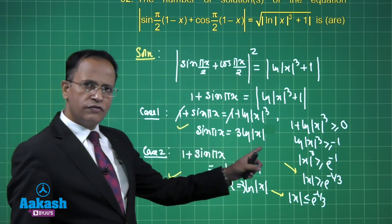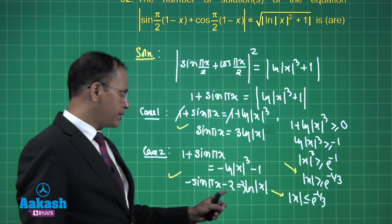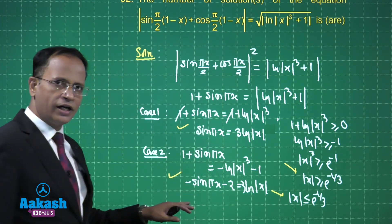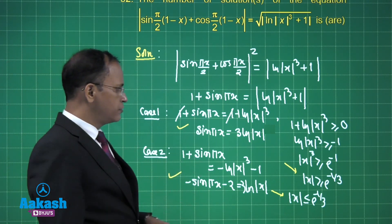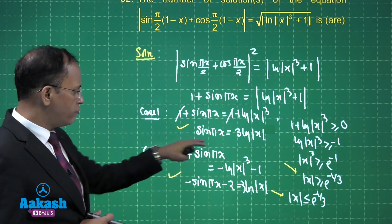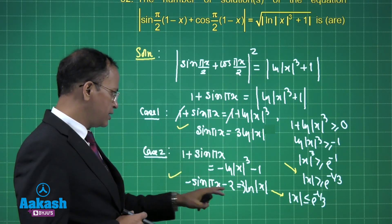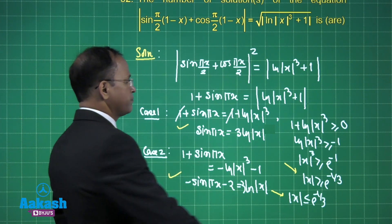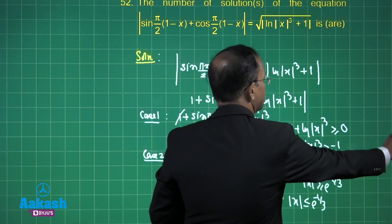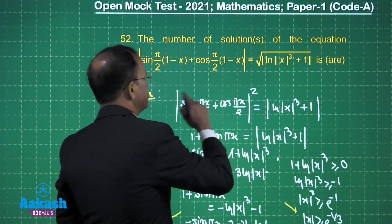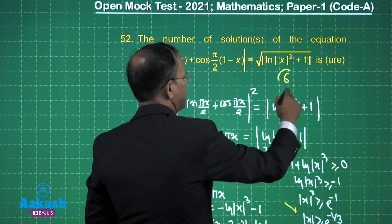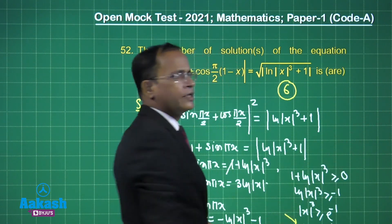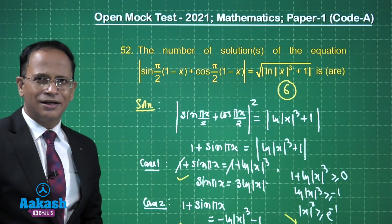Drawing the graphs for sin(πx) vs 3·ln(x), and −sin(πx)−2 vs 3·ln(x), we find four points of intersection in Case 1 and two points in Case 2. So the total is 6, which is the final answer. Hopefully this is clear.